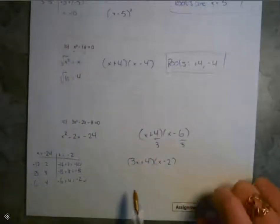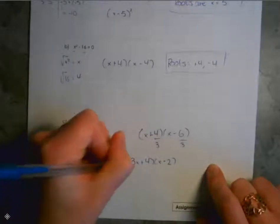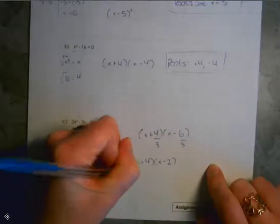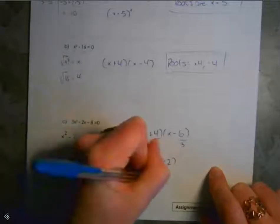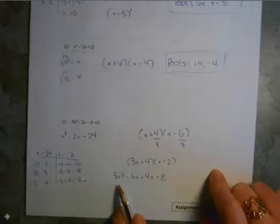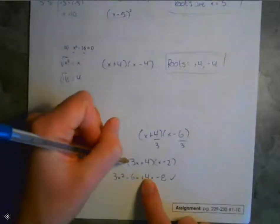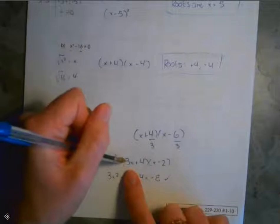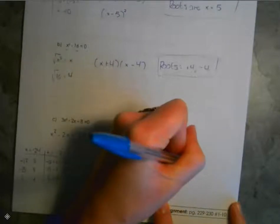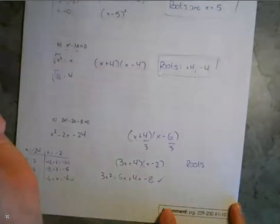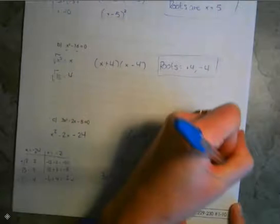Always check: 3x times x gives 3x squared; 3x times negative 2 gives negative 6x; 4 times x is plus 4x; 4 times negative 2 is minus 8. Negative 6 plus 4 gives negative 2. This checks out. Now for the roots — the common mistake is thinking you need to use the 3, but you don't. We only use the second values. So the roots are positive 4 over 3 — wait, actually we set 3x plus 4 equal to zero: x equals negative 4 over 3; and for x minus 2 equals zero: x equals positive 2.